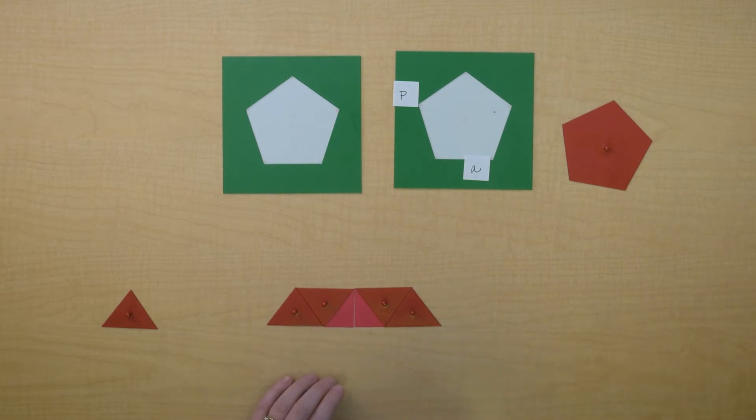We can see that if we wanted to find the area of this trapezoid, we would need to take the major base plus the minor base, which is the perimeter of the pentagon, and we'd need to multiply it by half of the height of the trapezoid, which is half of the apothem of the pentagon.